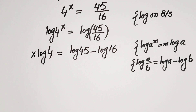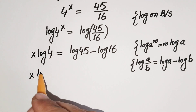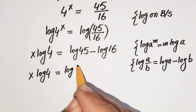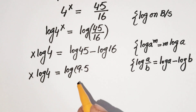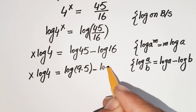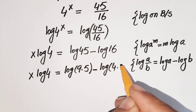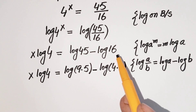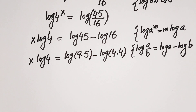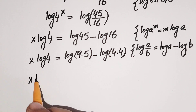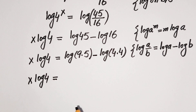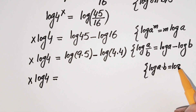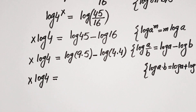Now x log 4 is equal to log 45, which can be written by factorizing 45 as log of 9 times 5, since 9 times 5 equals 45. And 16 can be written as 4 squared. Then using the logarithm product law — log a times b equals log a plus log b — we expand the right hand side.